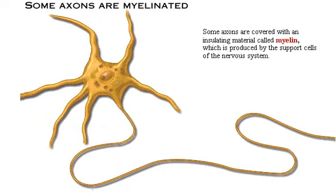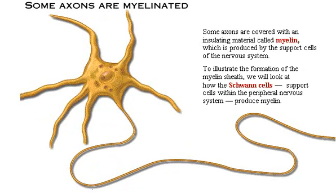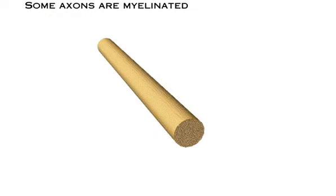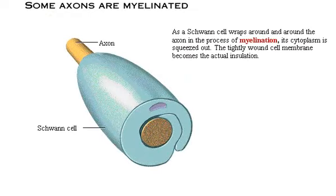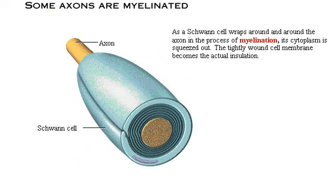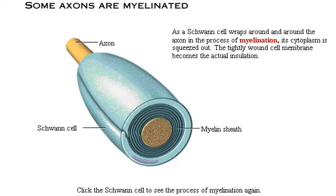Some axons are covered with an insulating material called myelin, which is produced by the support cells of the nervous system. To illustrate the formation of the myelin sheath, we will look at how Schwann cells — support cells within the peripheral nervous system — produce myelin. Click the axon to see the process of myelination. As a Schwann cell wraps around and around the axon, its cytoplasm is squeezed out, and the tightly wound cell membrane becomes the actual insulation.